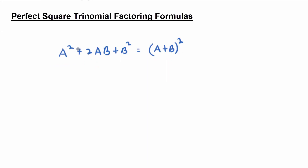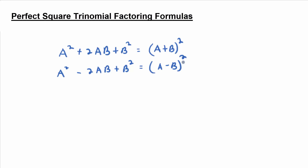The other version of the formula changes the plus to a minus. So how does that change things? a squared minus 2ab plus b squared factors to be (a − b) squared. Good — (a − b) squared.